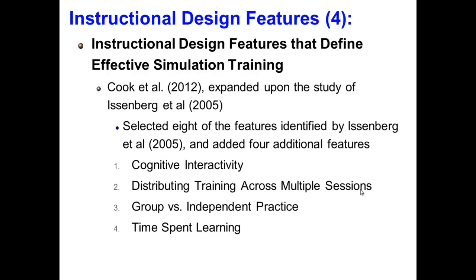A similar review by Cook et al. 2012 expanded upon the study by Eisenberg et al. 2005. Cook et al. selected eight of the features identified by Eisenberg et al. 2005 and added four additional features. Number one: cognitive interactivity — training that promotes learners' cognitive engagement using strategies such as multiple repetitions, feedback, task variation, or intentional task sequencing. Number two: distributing training across multiple sessions — training spread over a period of time. Number three: group versus independent practice — training activities involving two or more learners, as compared with training alone. Number four: time spent learning.